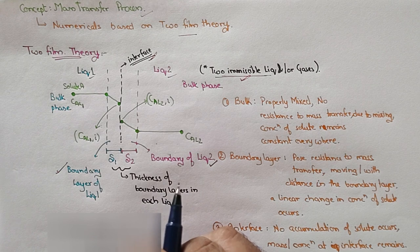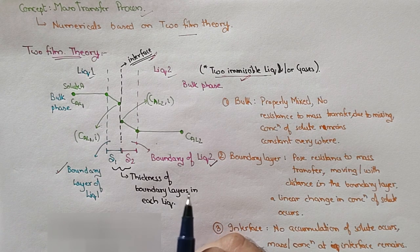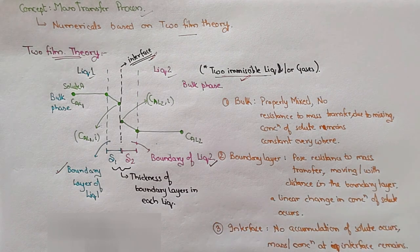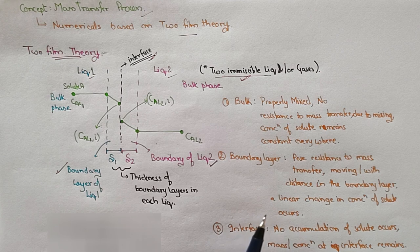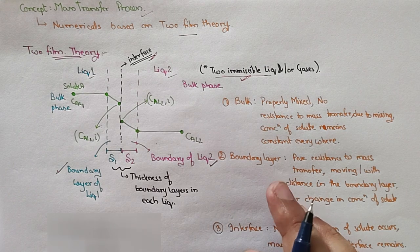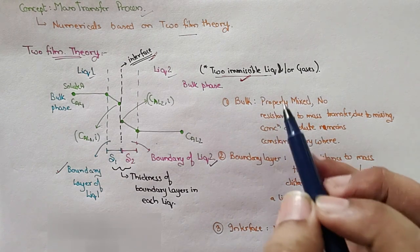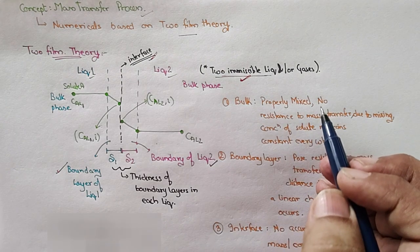Today we are going to see the numericals based on Two Film Theory. This is one of the most widely used theories for understanding mass transfer processes in biological systems. Before going into the numericals, let's have a briefing over the concept — what exactly Two Film Theory is all about. One important consideration is there should be two immiscible systems: it may be a combination of liquid-liquid or liquid-gas.